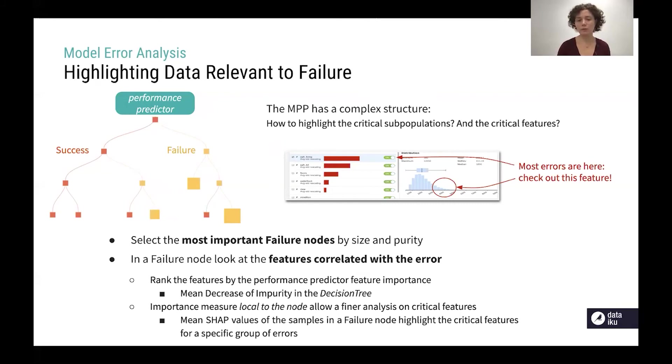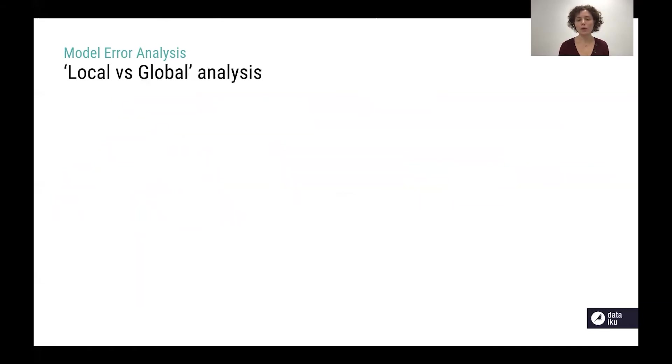Those give us the critical features for a specific group of errors and one example of doing this is to use the mean SHAP values of the samples inside that fall under a specific failure node. One important tool to get insights from the model performance predictor is this discriminative local versus global analysis.